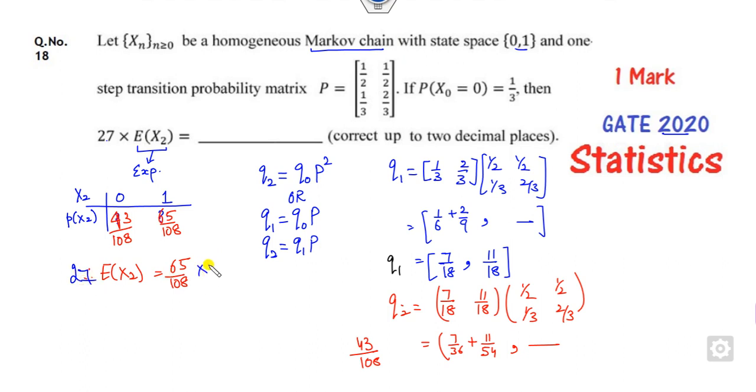If you multiply 27 on both sides, 27, 4, 65 upon 4, that is 1, 16.25 is the right answer of this problem.